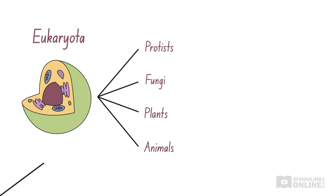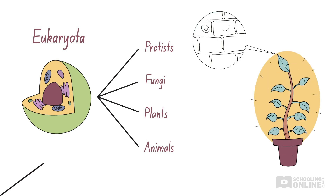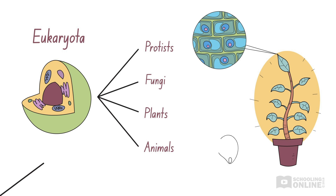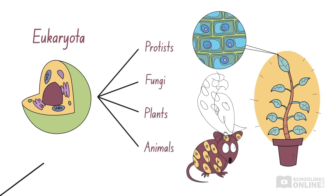Eukaryotes are found in various environments and can sexually reproduce. So far, we have explored the structure and function of plant cell components. If you would like to revise this, please see our earlier videos on plant cells. As you watch our videos on animal cells, you'll probably spot some cell components that are also found in plant cells — the structure and function of these are often similar. We'll discuss this in our upcoming video on comparing plant and animal cells.